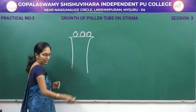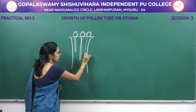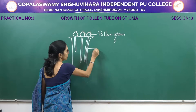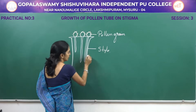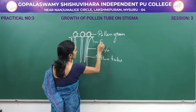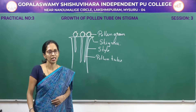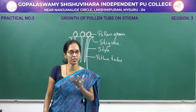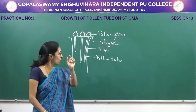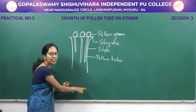When the pollen grain falls on the stigmatic surface and absorbs water and sugar, the intine grows out as a tube-like structure — this is called the pollen tube. Wherever there is a germ pore region, the inner intine grows out as a tube-like structure that penetrates through the style until it reaches the ovule or the embryo sac.